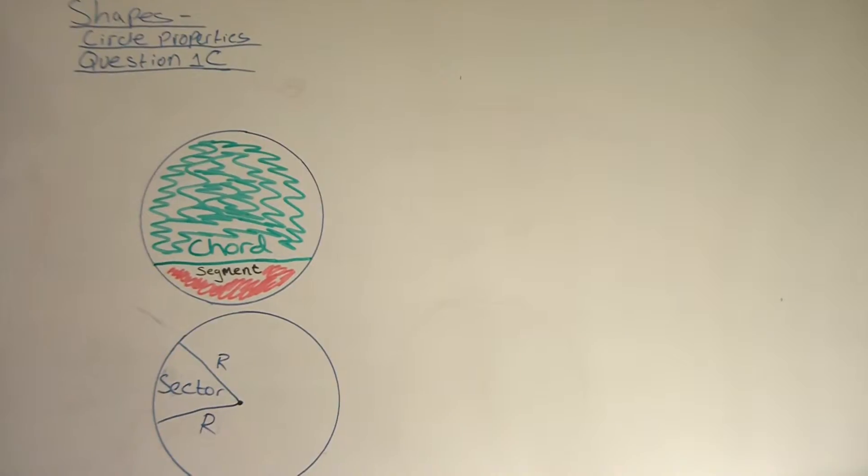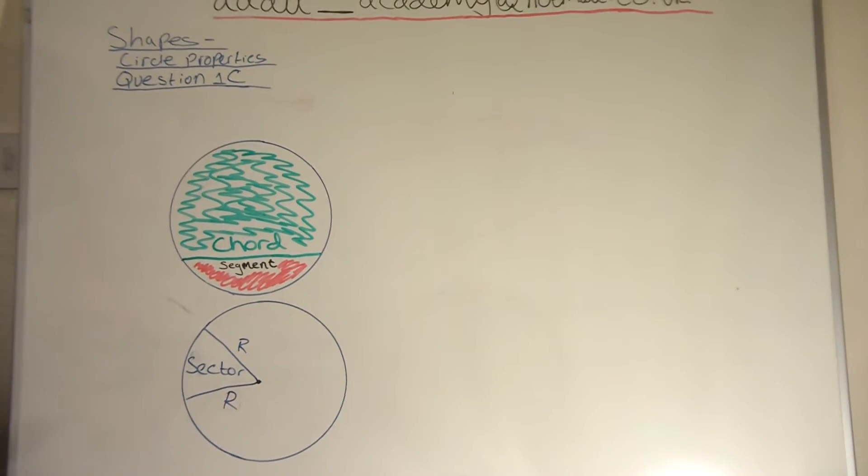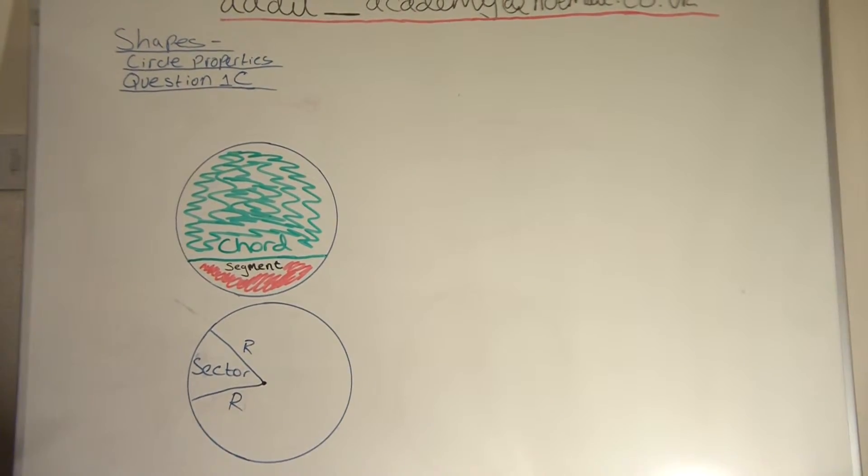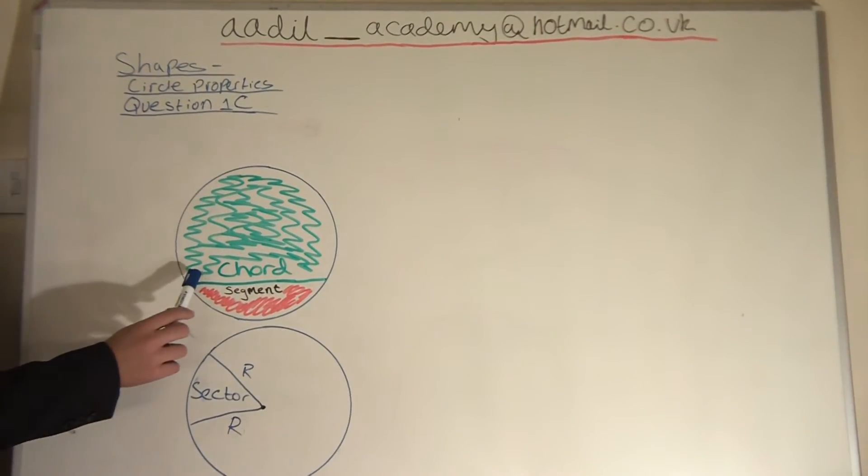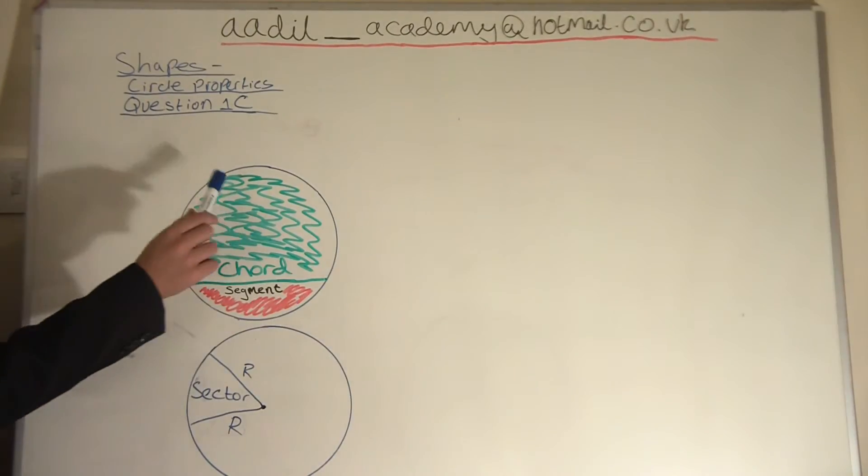A segment is a chord divides a circle into two segments. So this is segment number one and this is segment number two and the chord divides it into two segments.